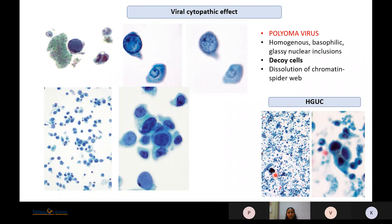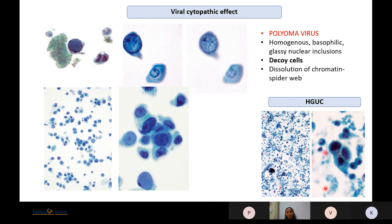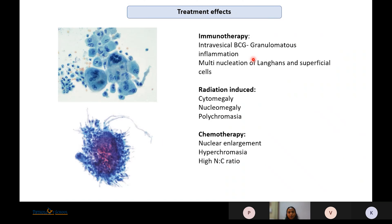Viruses which can infect the bladder include HCV and the polyoma virus. Polyoma virus shows characteristic homogeneous basophilic glassy nuclear inclusions; over time there is dissolution of chromatin giving a fiber web-like appearance. In images showing hypercellularity with a mix of pale and dark cells, the pale cells with glassy basophilic inclusions indicate polyoma virus. If all cells appear darker on high power, that is high-grade urothelial carcinoma.